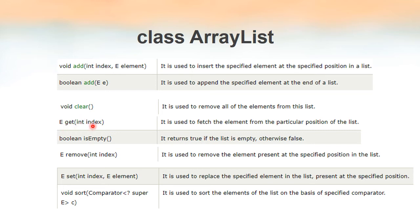The get(int index) method is used to retrieve an element from the list — we specify the index number and this method returns the element located at that index. We also have the isEmpty() method to check whether the list is empty, since with a dynamic list we may keep removing elements until it becomes empty. Its return type is boolean: it returns true if the list is empty, otherwise false.